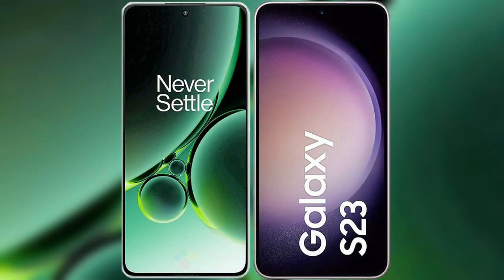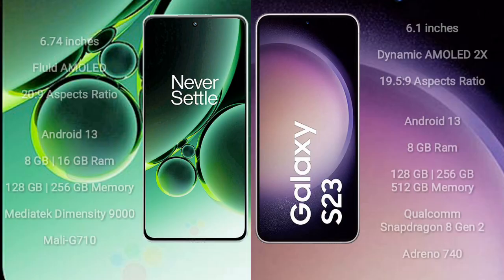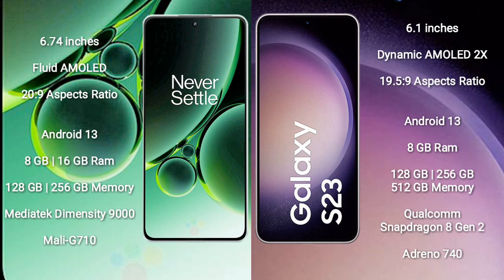I will compare the new OnePlus Nord 3 with Samsung Galaxy S23. OnePlus Nord 3 comes with a 6.74-inch flat AMOLED display and aspect ratio 20:9. Samsung Galaxy S23 comes with a 6.1-inch dynamic AMOLED display and aspect ratio 19.5:9.